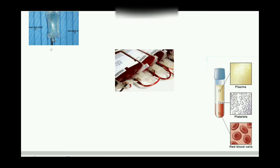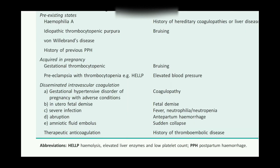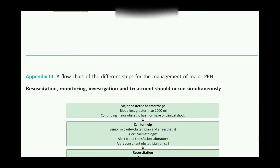Along with ABC, fluid management is important. We give 2 liters of isotonic crystalloid and 1.5 liters of colloid. Then blood transfusion and blood products — which include plasma, platelets, red cells, and FFP — are all included. We must have all these essential things ready for resuscitation.